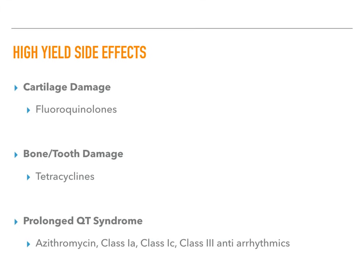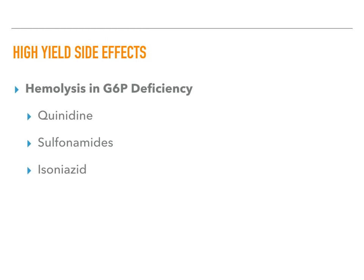Class 1B antiarrhythmics do not affect the potassium current and therefore do not prolong the QT. For hemolysis in a G6PD-deficient patient, think quinidine, sulfonamides, and isoniazid. Isoniazid causes many different side effects, which will be covered in the next section.